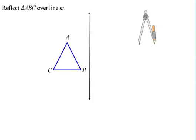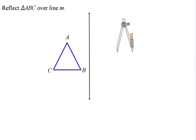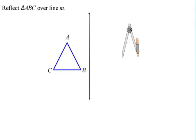Select triangle ABC over line M. The first thing you want to do is select a point from your pre-image, and we're going to use our compass to create a line that's perpendicular to the line of reflection but that goes through that point of the pre-image.